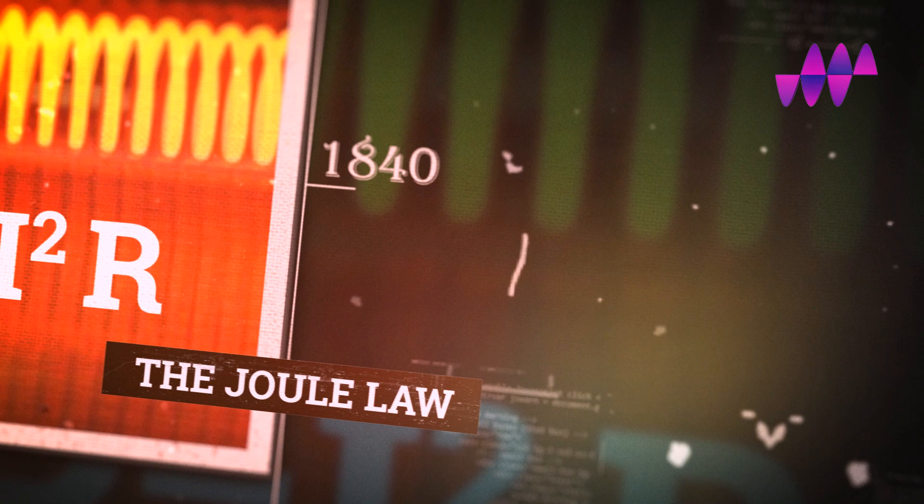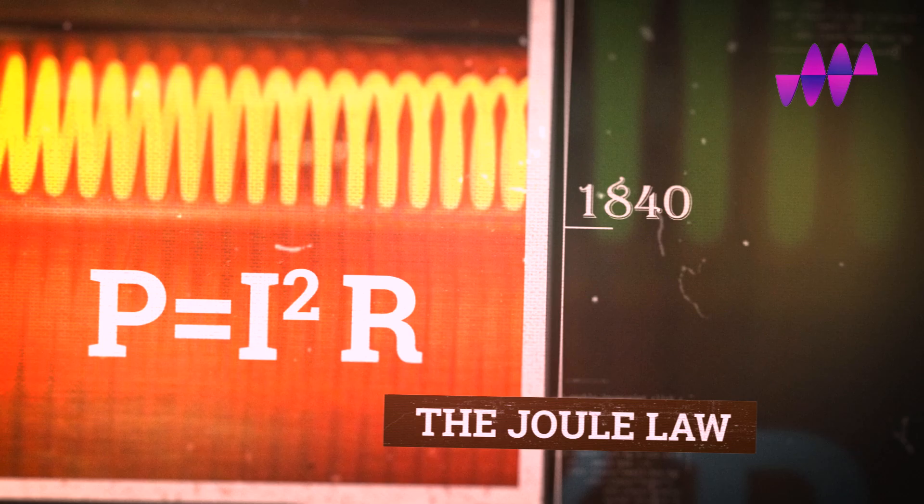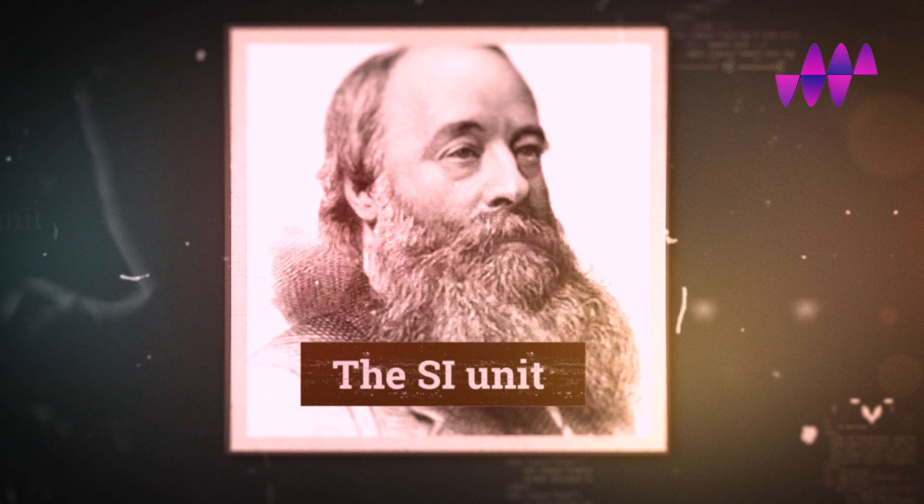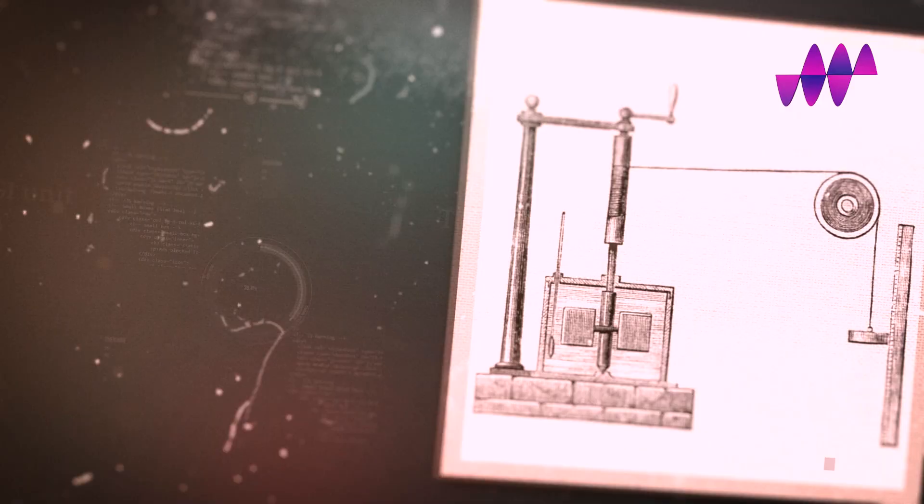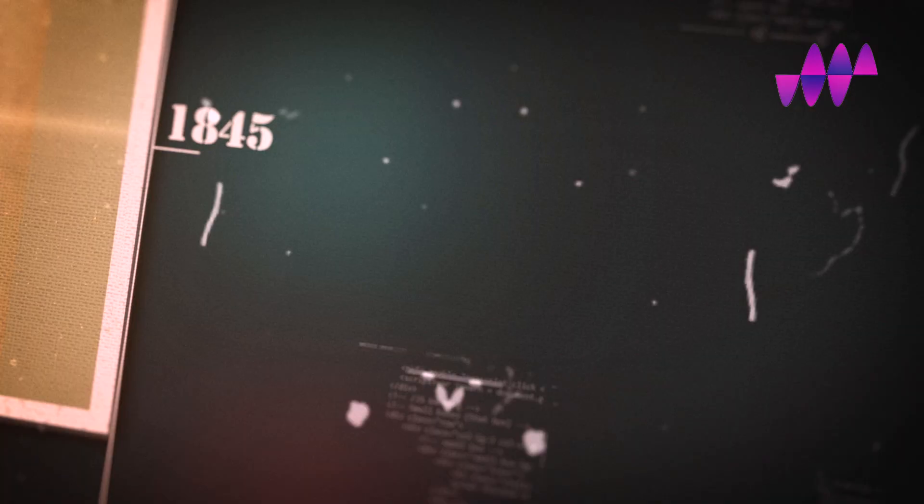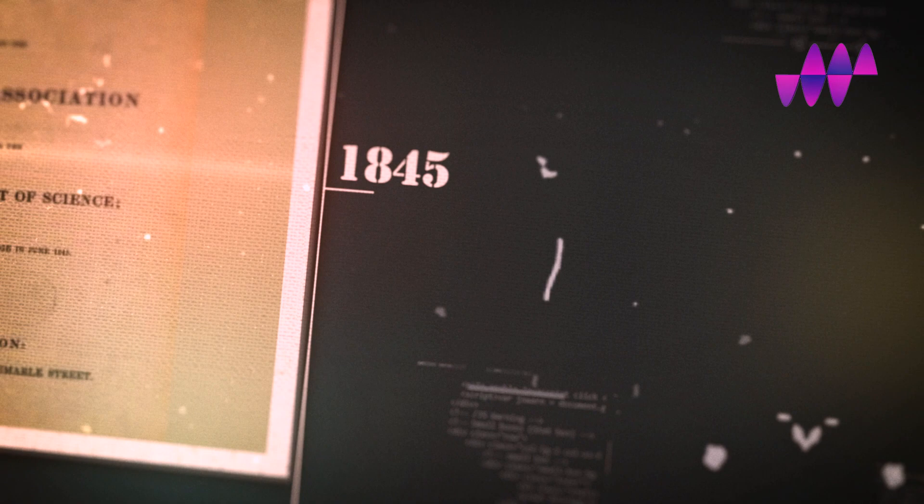In 1840, Joule published a paper describing Joule's Law: the quantity of heat generated per second in a wire carrying current is proportional to the electrical resistance and the square of the current, P=I²R. The SI unit of work was named after him. In 1843, he conducted a famous experiment proving that heat is a form of mechanical energy.